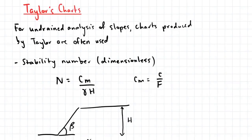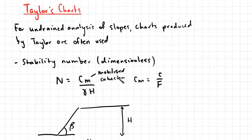In the undrained analysis of slopes, charts produced by a person named Taylor are often used. Before I show you the charts, let me first introduce you to a dimensionless stability number known as n. So n is equal to CM, which is the mobilized cohesion, divided by gamma, which is the unit weight of the soil in the slope, and H, which is the height. The mobilized cohesion is equal to the cohesion of the soil divided by the factor of safety.